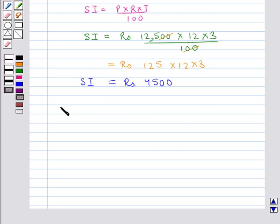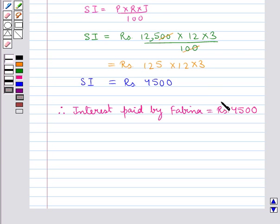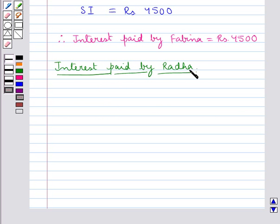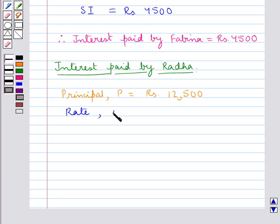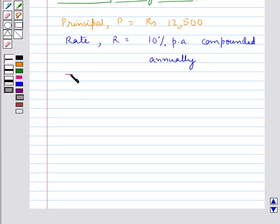So simple interest = Rs. 4,500. Therefore, interest paid by Fabina is Rs. 4,500. Now we shall calculate the interest paid by Radha. In this case, the principal P = Rs. 12,500, rate R = 10% per annum compounded annually, and time N = 3 years.